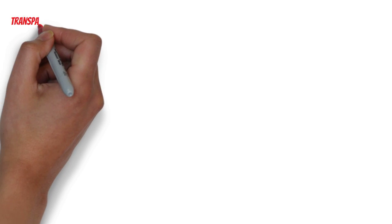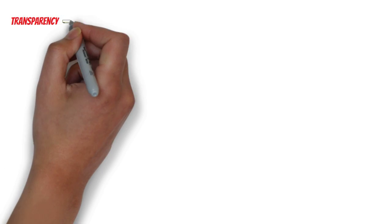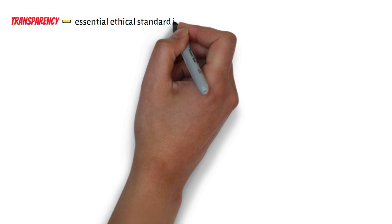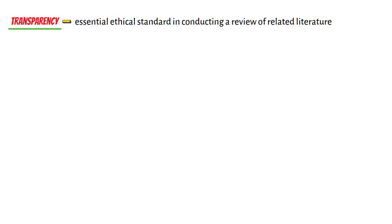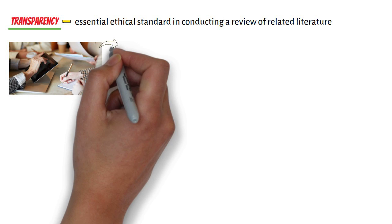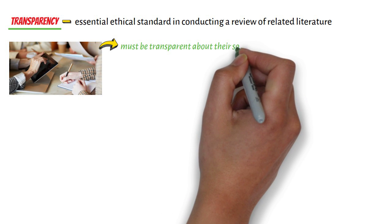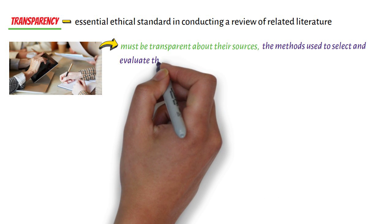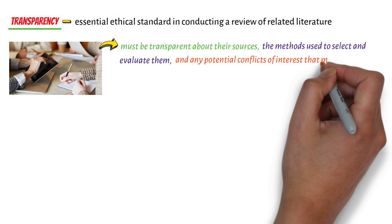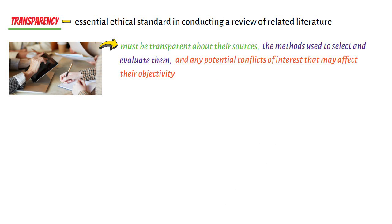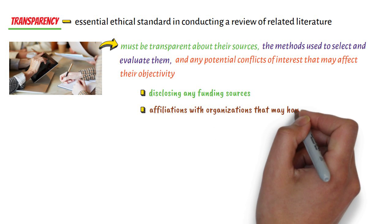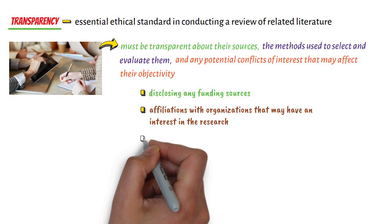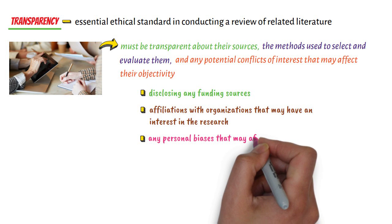Second, in terms of transparency. Another essential ethical standard in conducting a review of related literature is transparency. Researchers must be transparent about their sources, the methods used to select and evaluate them, and any potential conflicts of interest that may affect their objectivity. This includes disclosing any funding sources, affiliations with organisations that may have an interest in the research, and any personal biases that may affect the review.